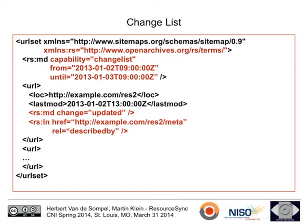For a change list, we not only convey the URI of the resource that changed but also what type of change occurred — in this case 'updated'. The metadata element at the top now has the capability 'changelist' and uses 'from' and 'until' attributes instead of 'at', marking the temporal boundaries of the interval the change list covers in terms of resource changes.